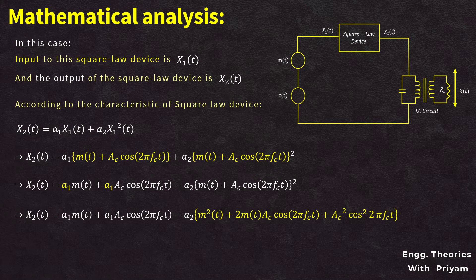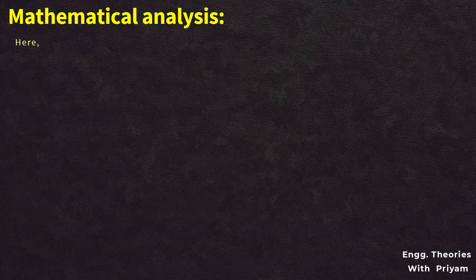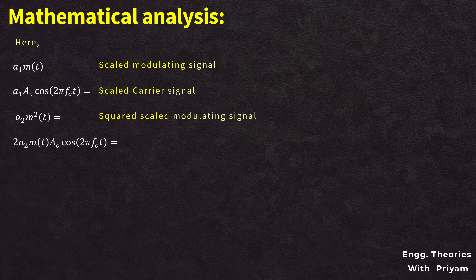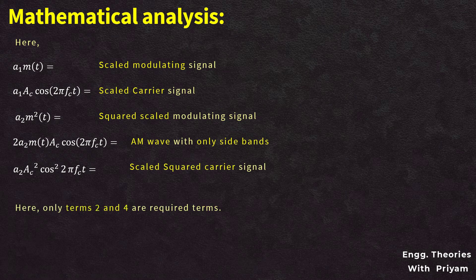Multiplying a2 through all terms in the bracket, x2(t) = a1·m(t) + a1·AC·cos(2πfc·t) + a2·m²(t) + 2·a2·m(t)·AC·cos(2πfc·t) + a2·AC²·cos²(2πfc·t). This is equation number three. Here, term 1 is the scaled modulating signal, term 2 is the scaled carrier signal, term 3 is the scaled squared modulating signal, term 4 is the amplitude modulated signal with sidebands only, and term 5 is the scaled squared carrier signal. The desired terms are term 2 and term 4.